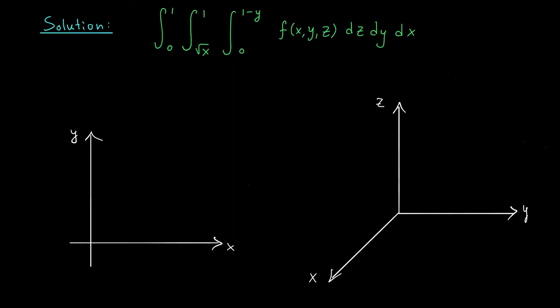We have our triple integral and we need to turn these bounds into a 3D picture of our domain of integration. There are just too many variables at play: z bounded between two quantities, y bounded between two quantities, x bounded between two quantities. What I like to do is consider the outer two integrals first and ignore the innermost one. The outer integral tells me x is bounded between 0 and 1, and the second integral tells me y is bounded between √x and 1. These two inequalities describe what the 3D domain looks like when projected down into the xy-plane. So let's start by sketching that 2D projection.